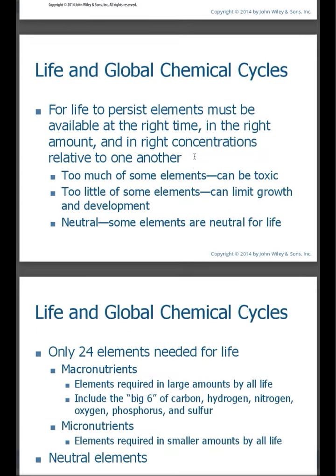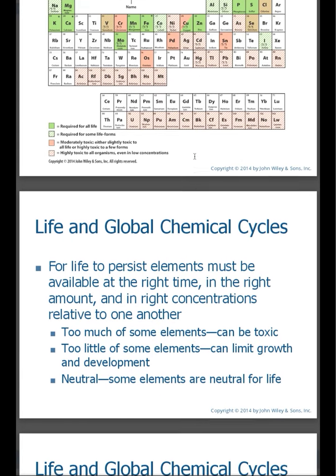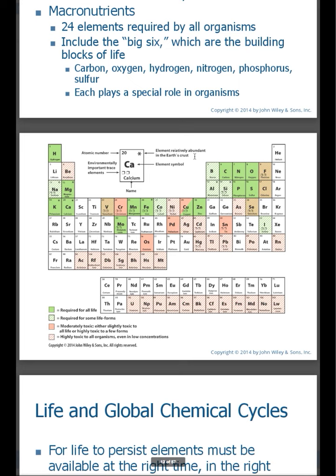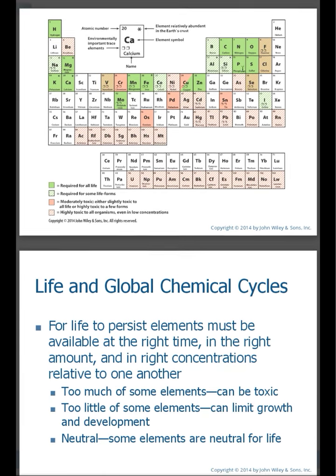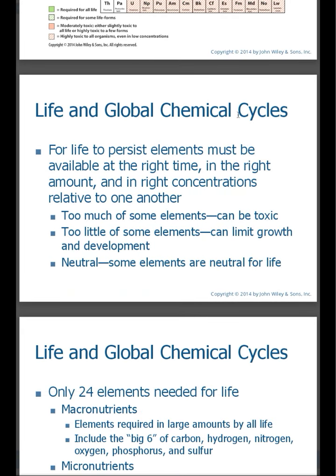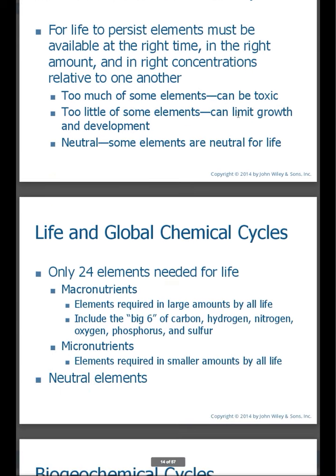When we talk about life itself, the elements above that we talked about, especially the big six — carbon, oxygen, hydrogen, nitrogen, phosphorus, and sulfur — we'll especially see the role that phosphorus plays in our DNA structure. It plays a very key role. For life to exist and to persist, these elements must be available at the right time, in the right amount, and in the right concentrations relative to other elements. Too much of some of these elements can be toxic. Too little can limit growth and development. And some elements have no impact for life.